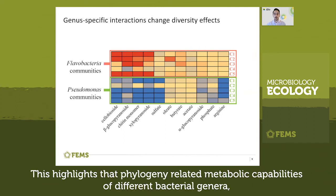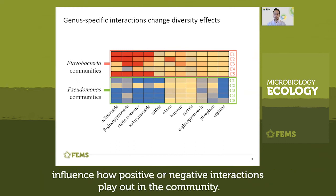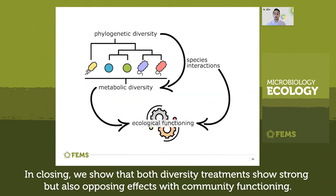This highlights that phylogeny-related metabolic capabilities of different bacterial genera influence how positive or negative interactions play out in the community. In closing, we showed that both diversity treatments showed strong but also opposing effects with community functioning.